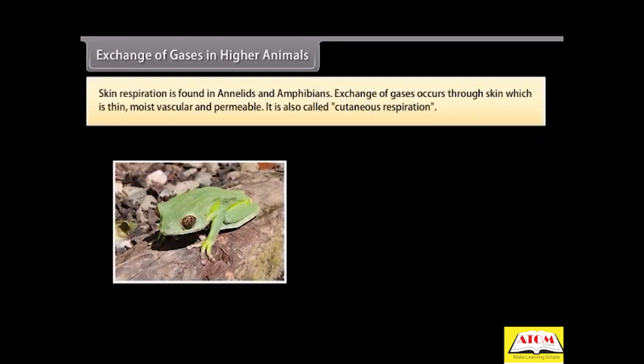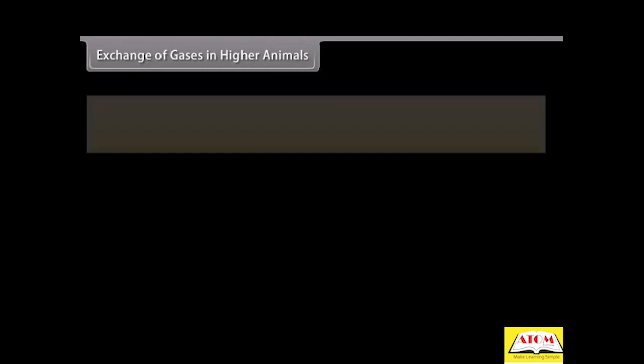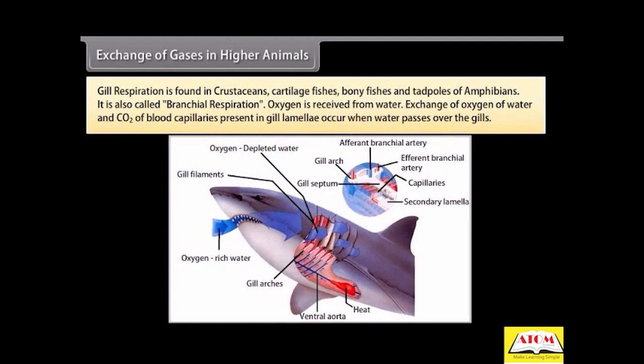Skin respiration is found in annelids and amphibians. Exchange of gases occurs through skin which is thin, moist, vascular, and permeable. It is also called cutaneous respiration. Gill respiration is found in crustaceans, cartilage fishes, bony fishes, and tadpoles of amphibians. It is also called branchial respiration. Oxygen is received from water. Exchange of oxygen of water and CO2 of blood capillaries present in gill lamellae occur when water passes through the gills.